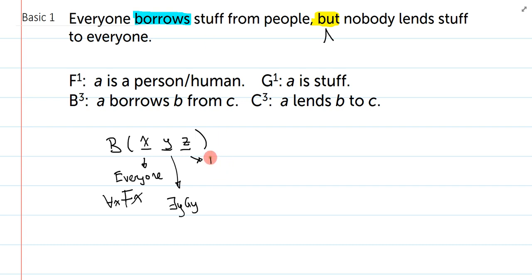And then finally, I have from people. So again, I have another F predicate, and that's going to be Z. But the question is, is this existential or universal? Am I saying everyone borrows stuff from all people, or everyone borrows stuff from some random generic person? And it seems that I'm talking about that.